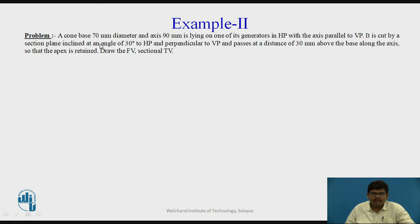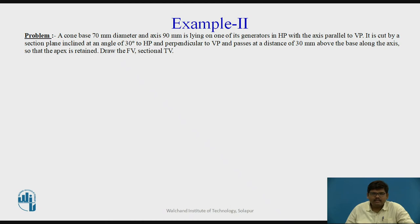Let us look at the question in detail. We have a cone of 70 mm base diameter — the base circle will be 70 mm — and axis height 90 mm. The axis is a line joining the center of the base and the apex, and it is a straight line of 90 mm. This cone is lying on a generator. As we all know, a cone is a solid of revolution and does not have specific edges or faces. It has a smooth surface, so we consider generators which are imaginary lines. The cone is lying on one of the generators in HP.